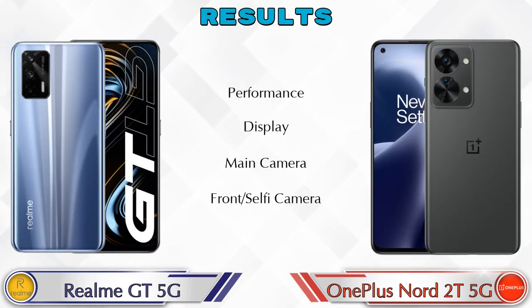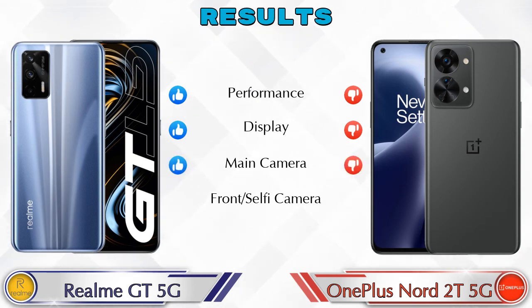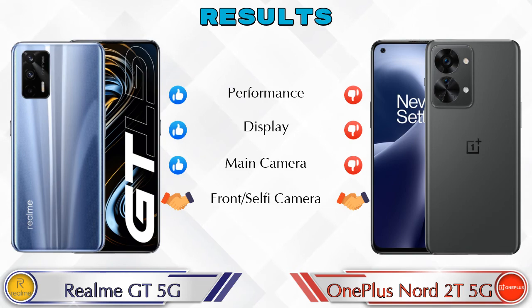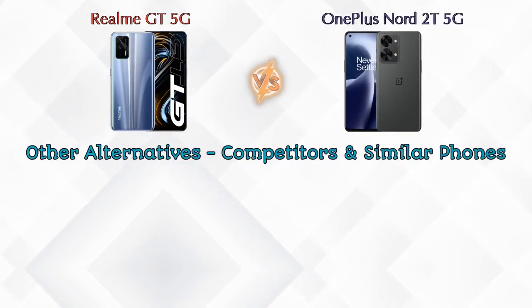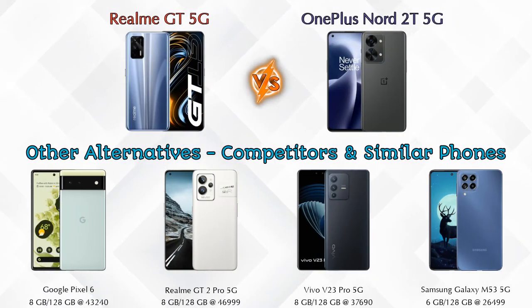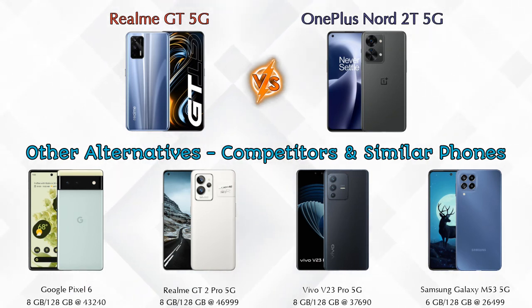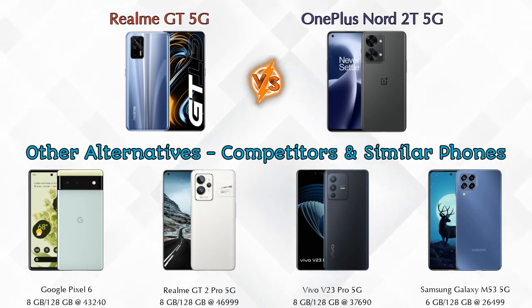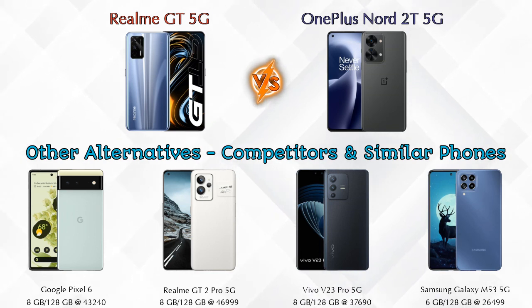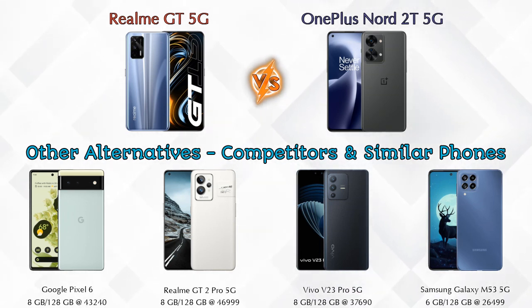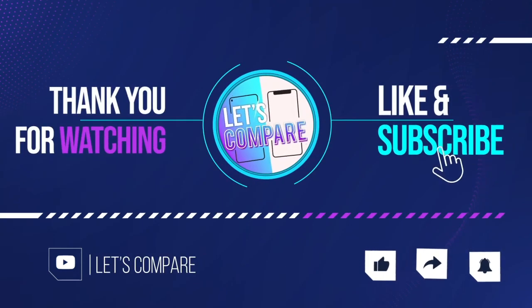In the final result, the GT 5G is ahead in performance, the GT 5G is also ahead in display, the GT 5G leads in main camera, and both phones are equal in front selfie camera. Other competitors at the same price include Google Pixel 6 5G, Realme GT2 Pro 5G, Vivo V23 Pro 5G, and Samsung Galaxy M53 5G — details about all competitor phones are available in the description. If you like our video, please like and subscribe. Thanks for watching!